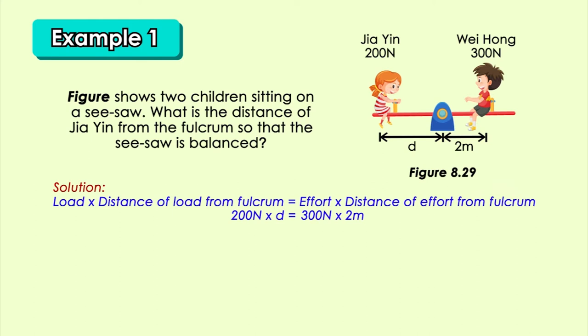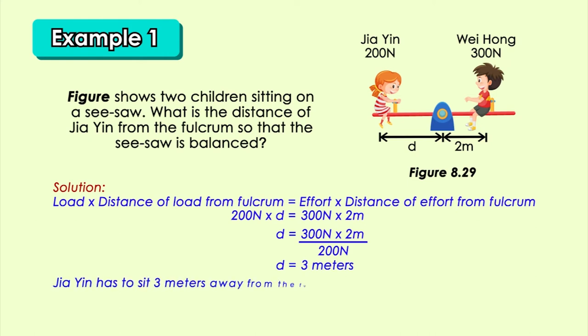Please follow the steps as shown here. Lastly, use your calculator to get the answer. D equals 3 meters. This means that Jia Ying has to sit 3 meters away from the fulcrum to make the seesaw balance.